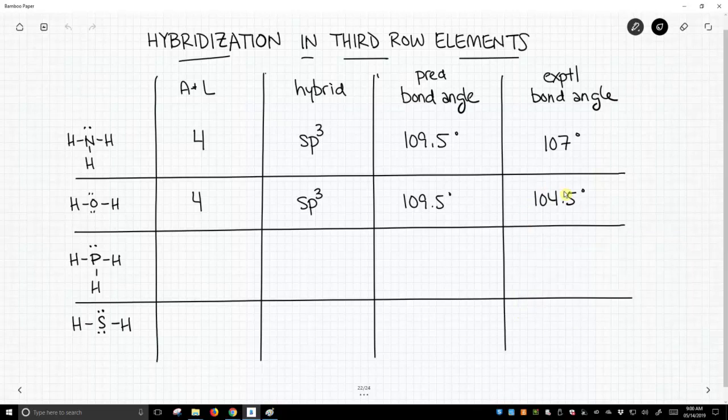How about the third row elements? So both of these next two structures... This structure, PH3, is called phosphine, and H2S is hydrogen sulfide. Both of these, if we add up the number of attached atoms and lone pairs, also give values of 4.